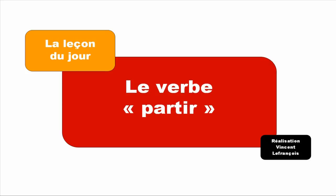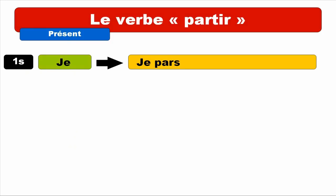So let's start with the first form. First person of the singular, it's JE. We get JE PARS — it ends with an S but we don't pronounce it. JE PARS. Repeat. JE PARS. And then for TU — TU PARS. TU PARS. Repeat.